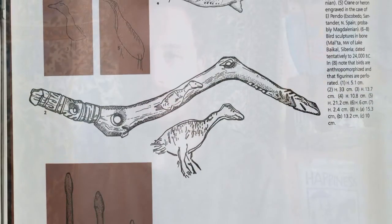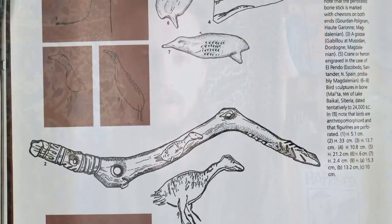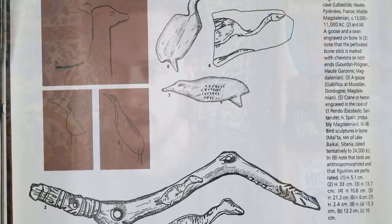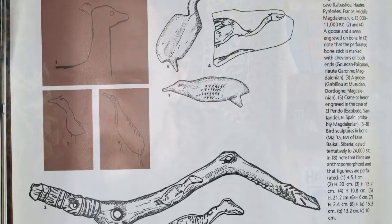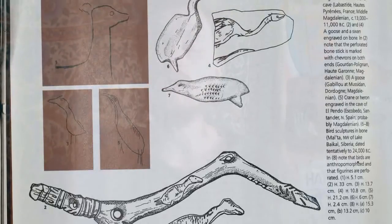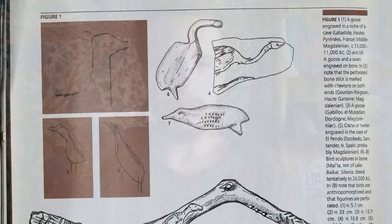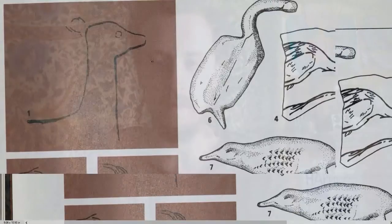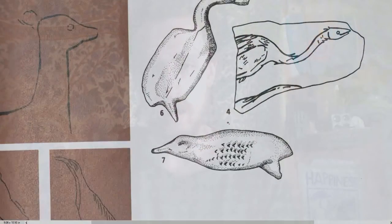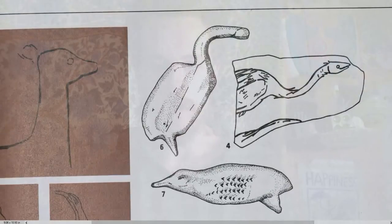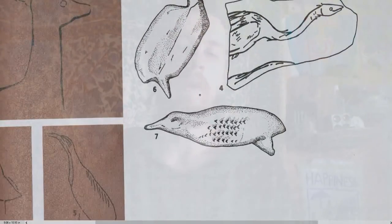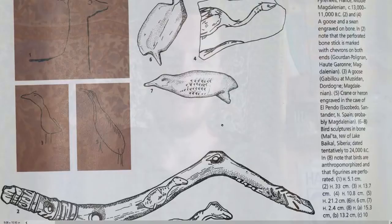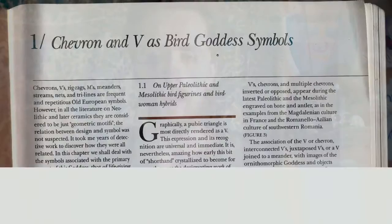Figures 6 through 8 are bird sculptures in bone from Malta near Lake Baikal in Siberia, dated tentatively to 24,000 BC. There is a series of chevrons on the base of the goose. Again, the association of this bird with the goddess's insignia of the chevron is clear.